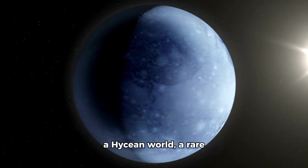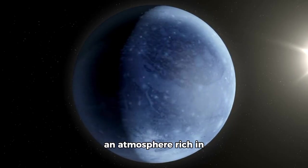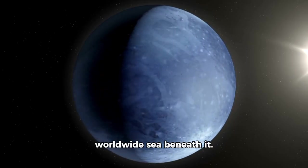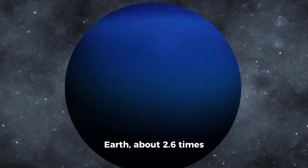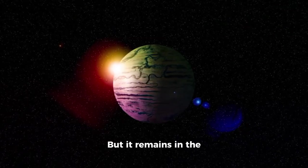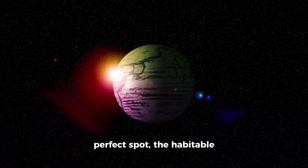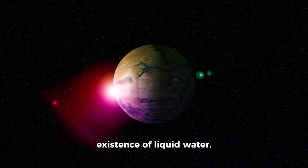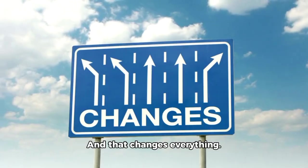It's something significantly different. A Hycean world, a rare type of planet with both an atmosphere rich in hydrogen and a vast worldwide sea beneath it. It's larger than Earth, about 2.6 times larger and nearly 9 times its weight. But it remains in the perfect spot, the habitable zone of its star, where temperatures could allow the existence of liquid water. And that changes everything.